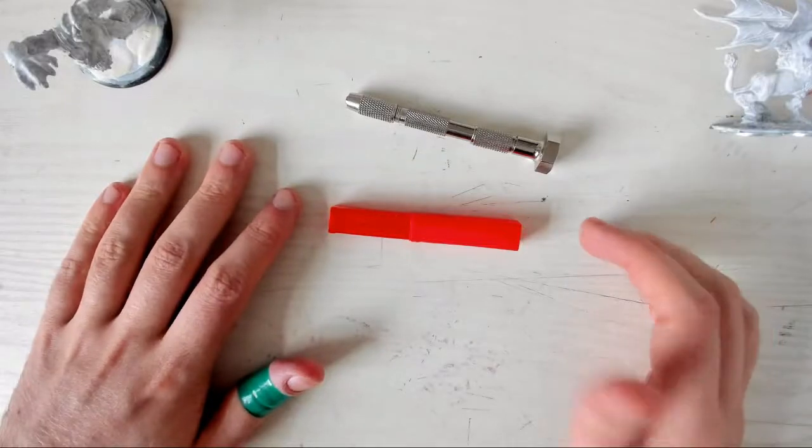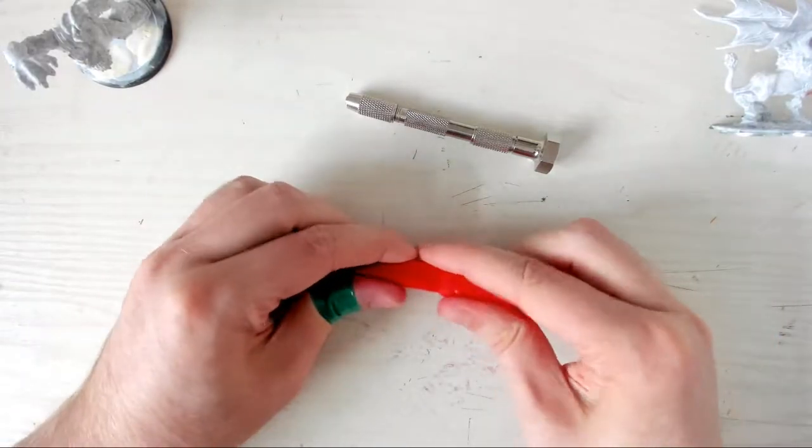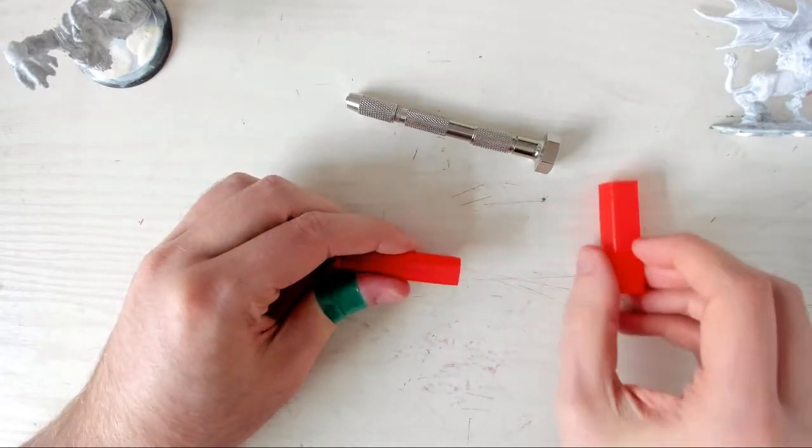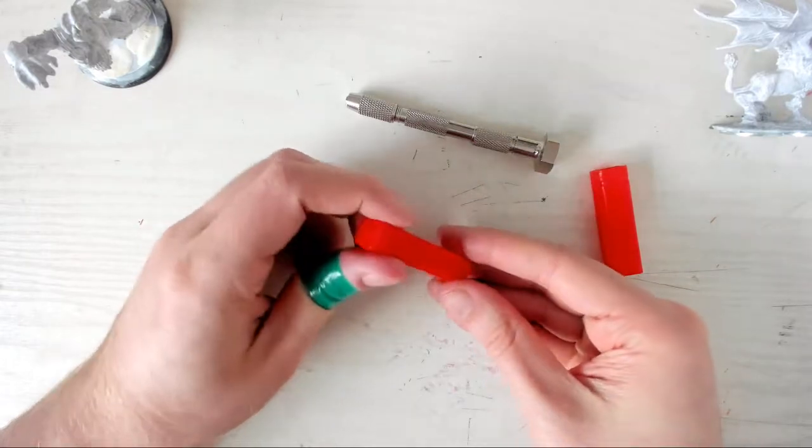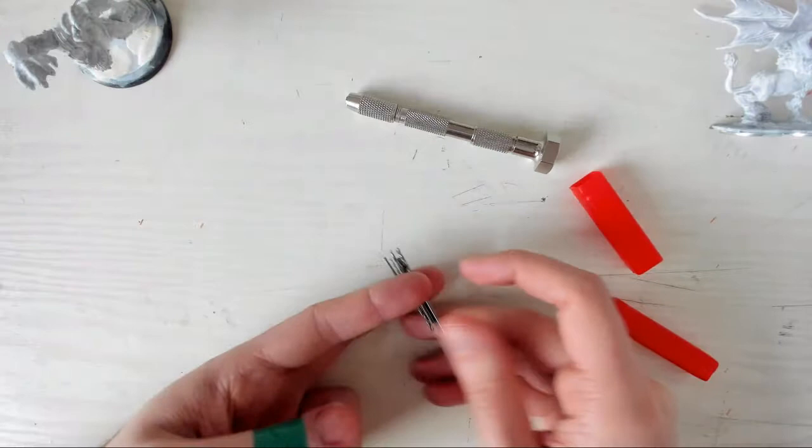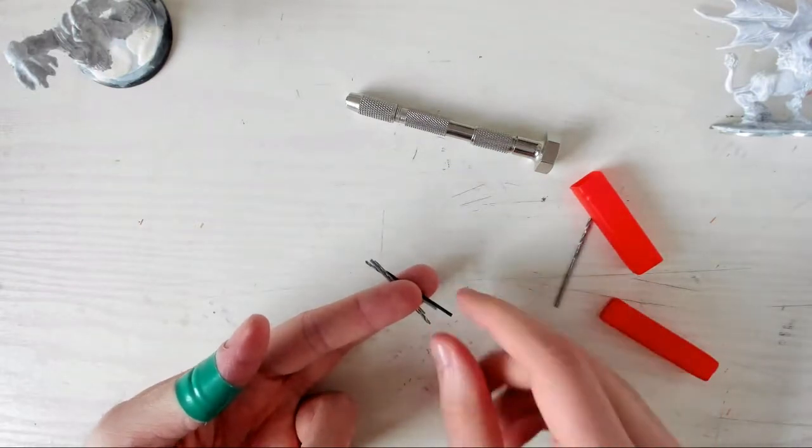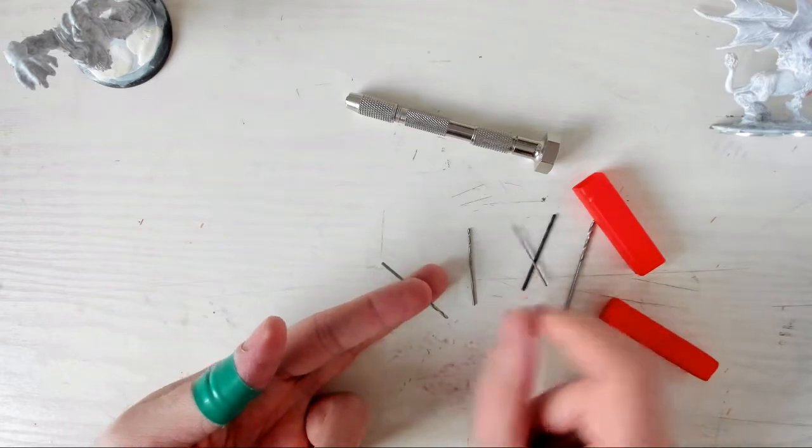Most pinvices come with a set of tiny drill bits too, often in these weird little plastic sleeves that sort of push themselves together. You can buy sets of mini drill bits separately if they break, or if you want a specific size. There's loads of different sized bits in this set. A slightly bigger one, a smaller one, a teeny tiny one, a teeny teeny tiny one, and somewhere in between.